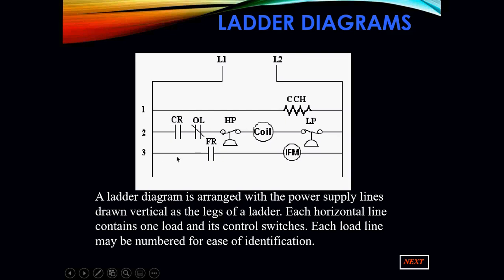Each horizontal part of it could be a rung of the ladder. Here's rung one, here's the next one, two, here's three. Each horizontal line contains at least one load and at least one switch. Each load line may be numbered for ease of identification. You will see this happen on much larger diagrams, especially if you're dealing with commercial sites, where for ease of identification and finding particular components in the diagram, it will give you a legend of what rung or what line number that particular component could be found on.